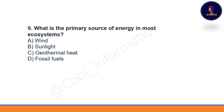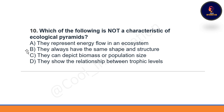What is the primary source of energy in most ecosystems? In most ecosystems, the primary source of energy is sunlight only. Option B will be correct. Next: which of the following is not a characteristic of an ecological pyramid? Options include: they represent energy flow in an ecosystem, they always have the same shape and structure, they can depict biomass or population size, and they show the relationship between trophic levels.